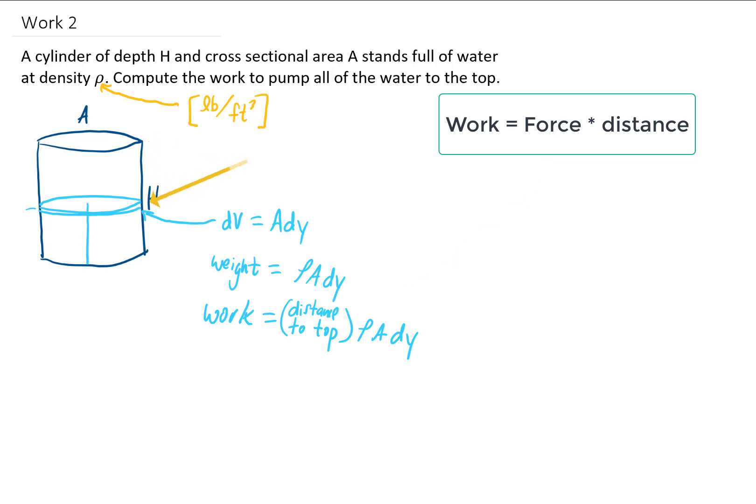Well the distance from this little slice of water to the top depends on where this little slice of water is between a height of 0 and a height of h. So we might define the height of this little slice of water as y, where y goes from 0 to h. And if we define things that way,